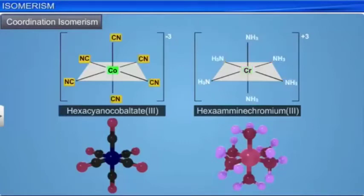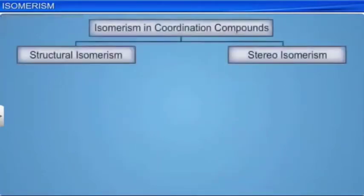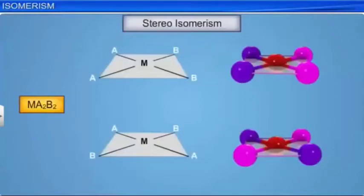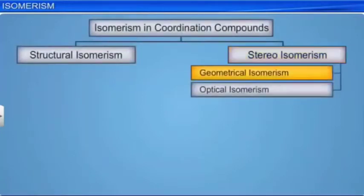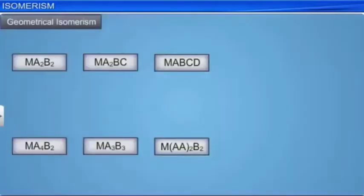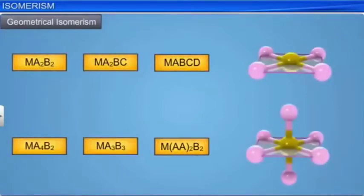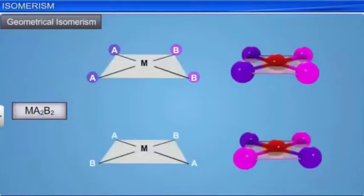Let's now look at stereoisomerism. Compounds with the same chemical formula and chemical bonds but different arrangement of atoms or groups in space are called stereoisomers. Stereoisomerism can be subdivided into geometrical isomerism and optical isomerism. Geometrical isomerism is also known as cis-trans isomerism. It is seen in heteroleptic complexes with coordination numbers 4 and 6. The isomer in which the two identical groups are adjacent to each other is known as a cis isomer, while the isomer in which the two identical groups are diagonally opposite is known as a trans isomer.